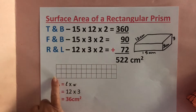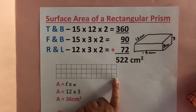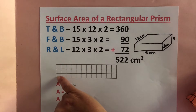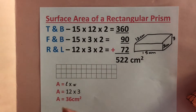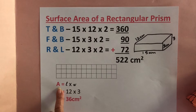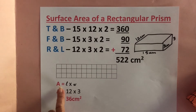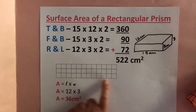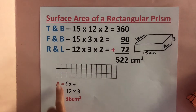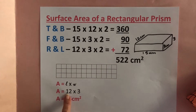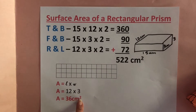I have a rectangle here and it happens to be 12 centimeters long by 3 centimeters wide. The formula for area of a rectangle is: area is equal to length times width. The length of this is 12 and the width is 3 centimeters. So multiply 12 times 3 and you get 36 square centimeters.